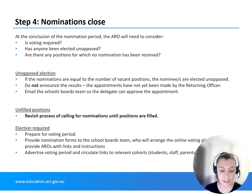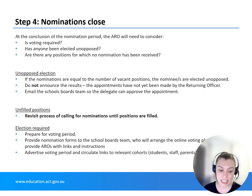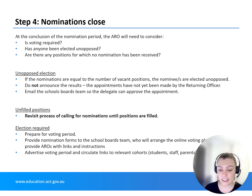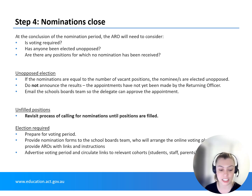The ARO will notify the school community that an election is required and provide the names of the nominees via school notice boards, newsletters, the school's website, and through other means as appropriate. The notification should include a brief statement from each candidate outlining why they are seeking appointment to the board. The notification should occur as soon as possible after the need for an election is determined, as the voting period must commence one week after nominations close, and must include relevant dates and information about the online election.